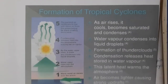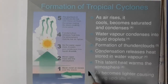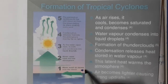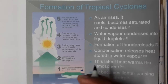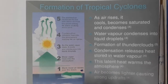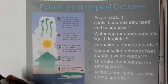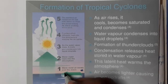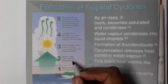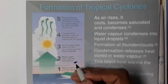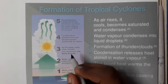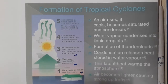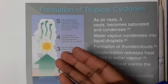Now let us go through the formation steps. The first step is that warm moist air moves over the ocean. Due to the sun, air molecules moving on the surface of the water become warm. Once that happens, water vapor rises in the atmosphere. As the water vapor rises it cools and condenses into liquid particles.